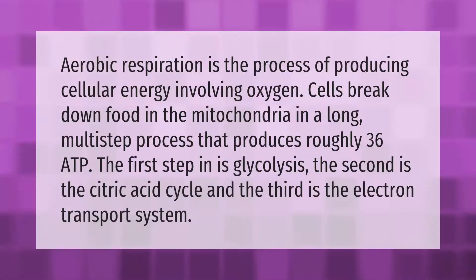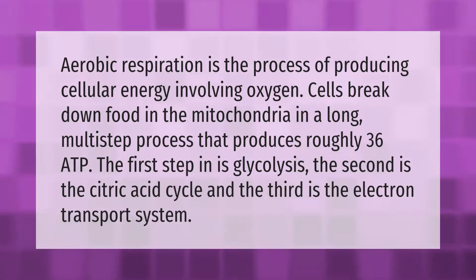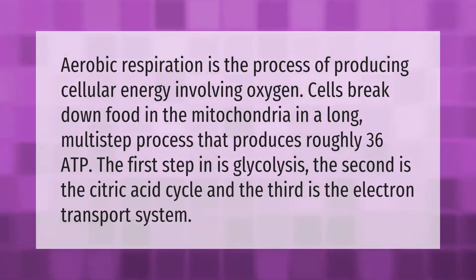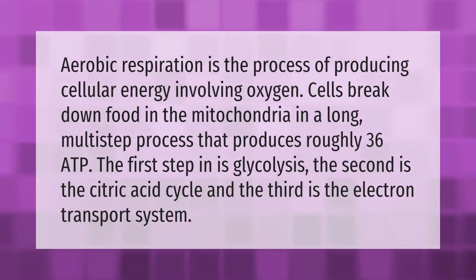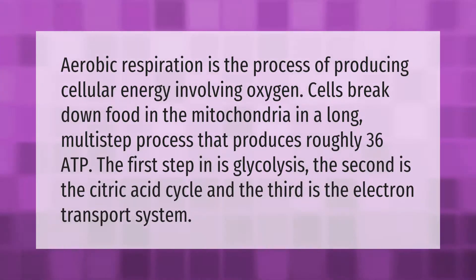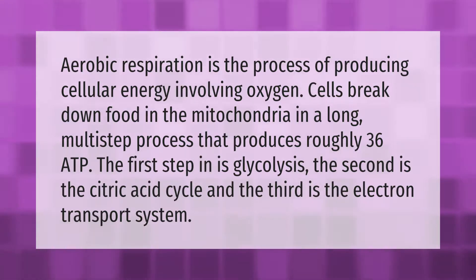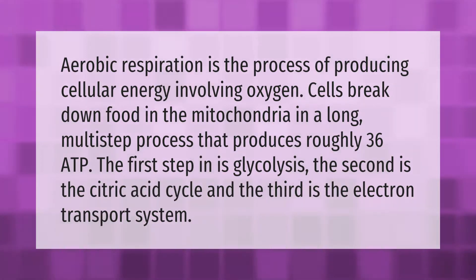Aerobic respiration is the process of producing cellular energy involving oxygen. Cells break down food in the mitochondria in a long, multi-step process that produces roughly 36 ATP. The first step is glycolysis, the second is the citric acid cycle, and the third is the electron transport system.